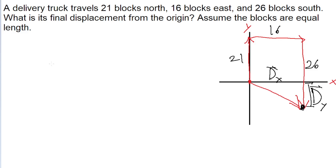Fortunately, it's easy from this diagram to figure out both of those things. We can see that the y-displacement is just going to be 21 minus 26, because we're traveling 21 positively, but then we traveled back down 26, which means that there's a net displacement of negative 5 blocks north, or just positive 5 blocks south, and 16 blocks east.